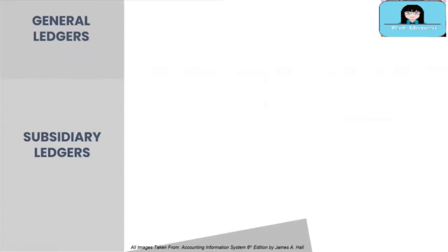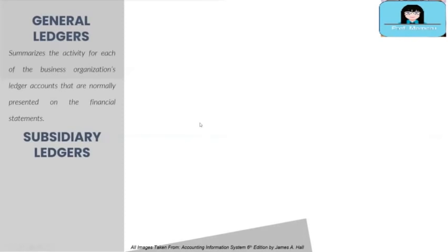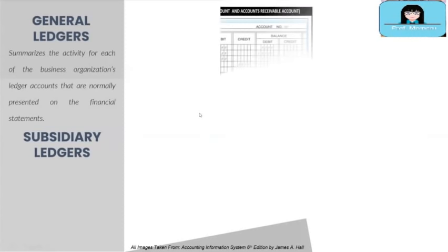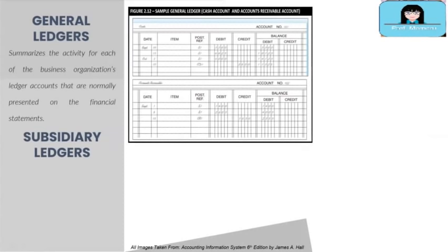Now we will discuss the types of ledgers, starting with the general ledger. The general ledger summarizes the activity for each of the company's ledger accounts or control accounts, such as cash, accounts receivable, inventory account, and many others presented on the financial statements. The screen shows an example of the general ledger for cash and accounts receivable.